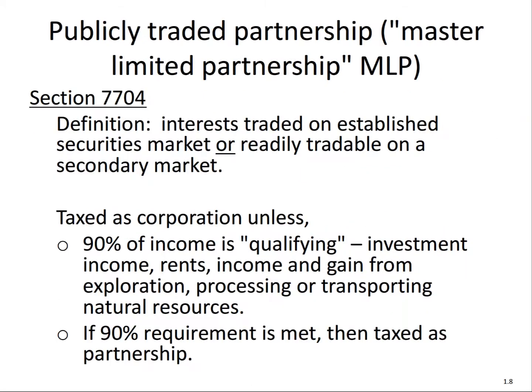Those are really the four steps. The final topic is publicly traded partnerships. Certain publicly traded partnerships must be treated as a corporation — defined as interests traded on an established securities market or readily tradable on a secondary market. They're taxed as corporations, meaning double taxation, unless 90% of the income is qualifying investment income, in which case they're treated as a partnership.